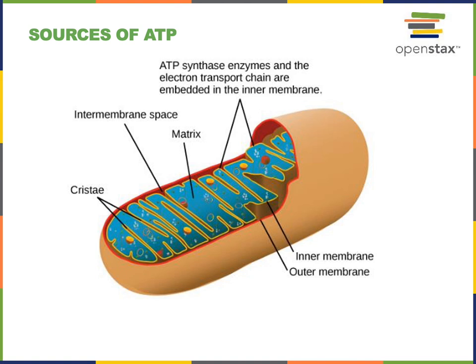Aerobic cellular respiration requires oxygen and will produce the waste product carbon dioxide. As energy is released from aerobic cellular respiration of glucose and glucose is broken down, that energy will be transferred into the chemical bonds of ATP molecules.